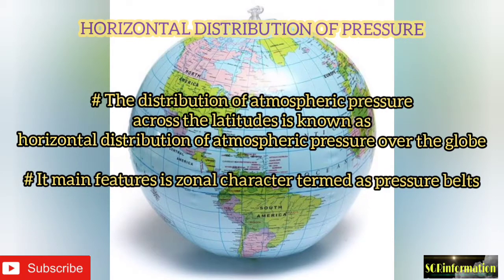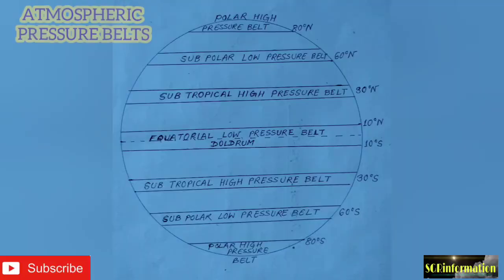Now, horizontal distribution of pressure: the distribution of atmospheric pressure across the latitudes is known as horizontal distribution of atmospheric pressure over the globe. Its main feature is a zonal character, termed as pressure belts. Atmospheric pressure belts can be divided into the equatorial low pressure belt,